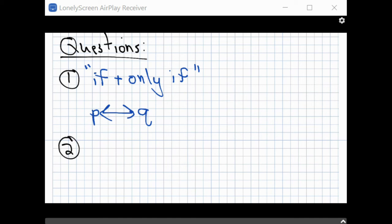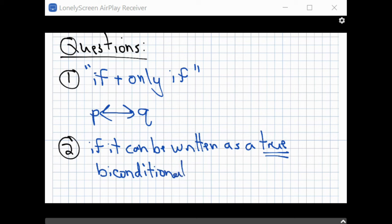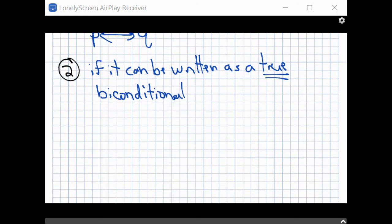Alright. How do you know if a definition isn't a good one? Well, we just defined that, but it's a good definition if it can be written as a true, because you can write false biconditionals, just right, you can write false conditionals on a true biconditional. If and only if.